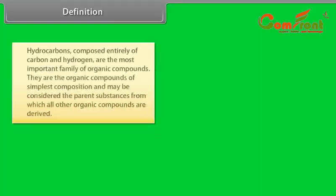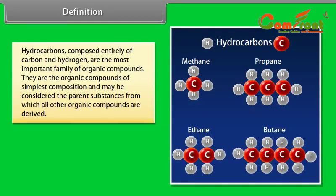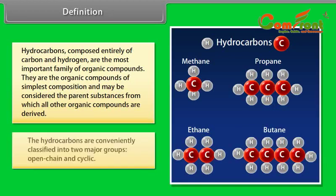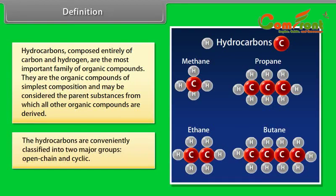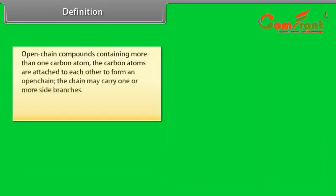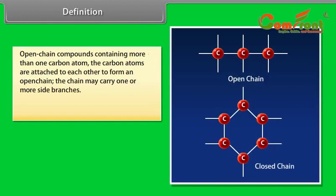Hydrocarbons are composed entirely of carbon and hydrogen. They are the most important family of organic compounds, the organic compounds of simplest composition, and may be considered the parent substances from which all other organic compounds are derived. Hydrocarbons are conveniently classified into two major groups: open chain and cyclic. In open chain compounds containing more than one carbon atom, the carbon atoms are attached to each other to form an open chain, which may carry one or more side branches.